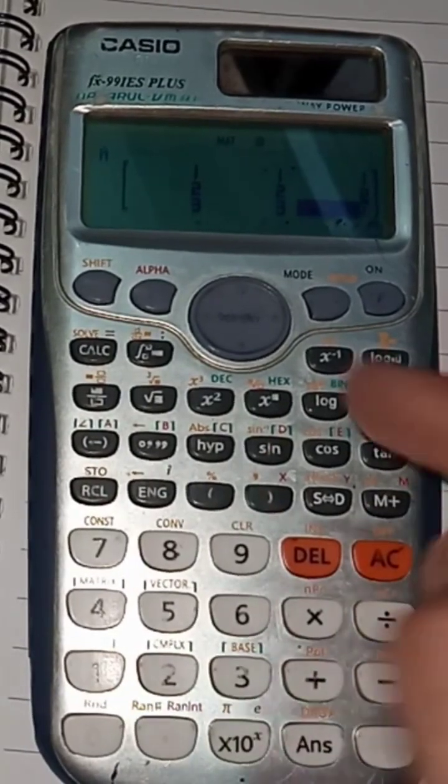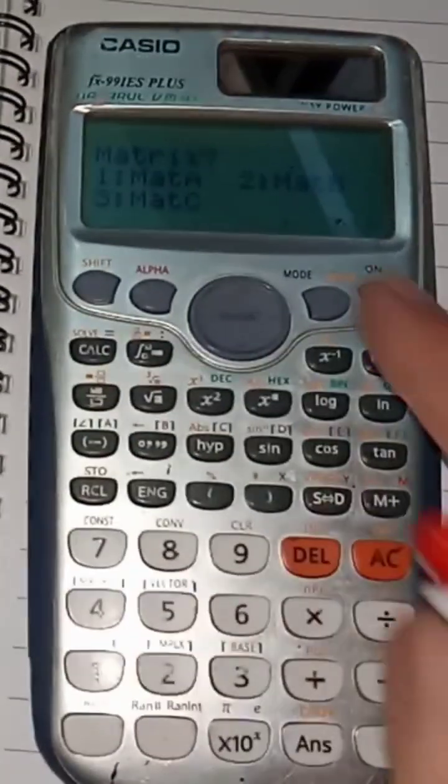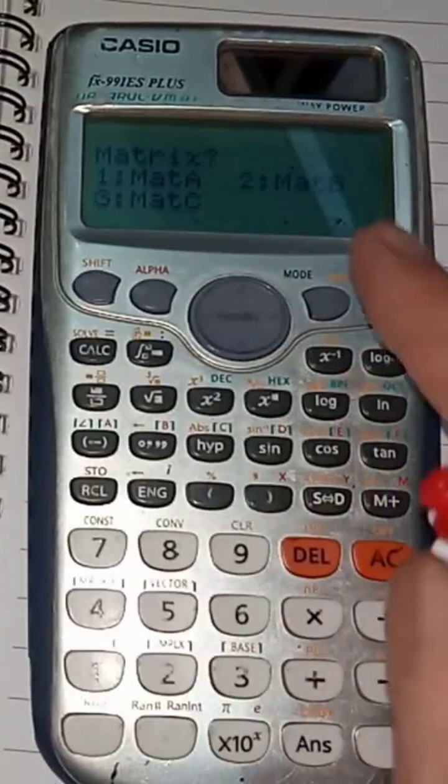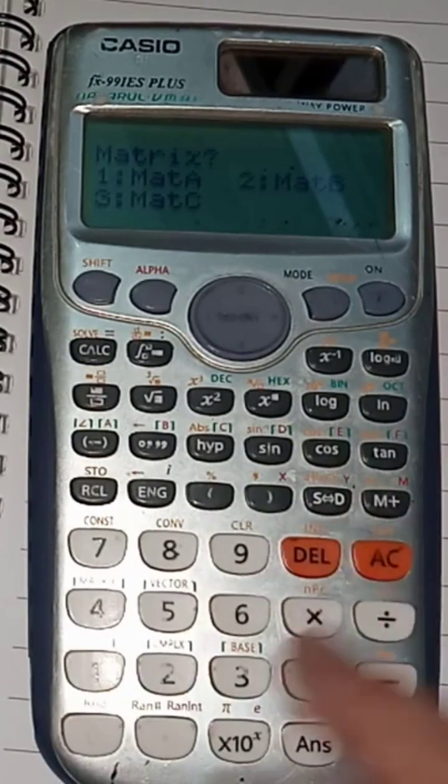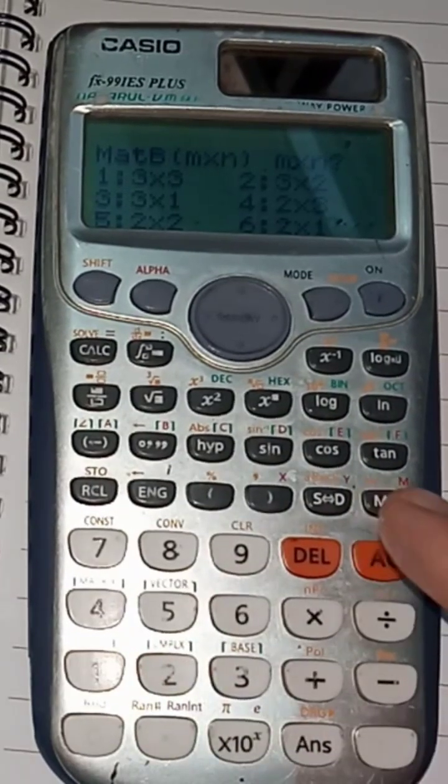Once you plug in all the values of matrix A, just press SHIFT and press 4. Now press 2 for data, and then you need to plug in the values of matrix B. You will press 2 as my second matrix is.